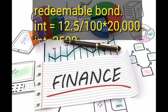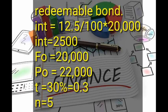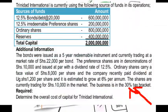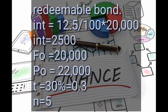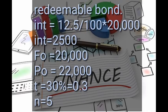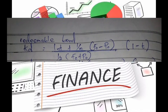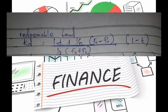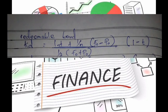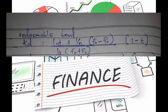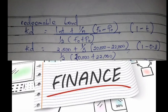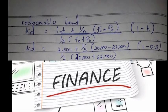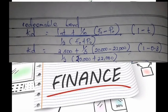Our face value was 20,000, market value was 22,000, tax rate was 30 percent, and n was five years. We use the formula for the specific cost of a redeemable bond, which was discussed in a previous video. Substituting in: interest is 2,500, plus 1 over n (which is 5), into brackets face value 20,000 minus market value 22,000.